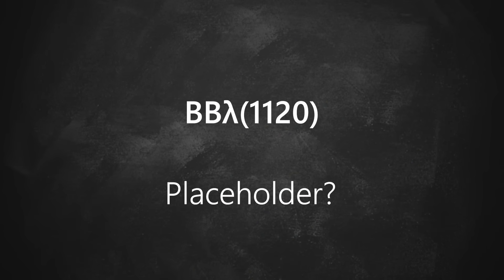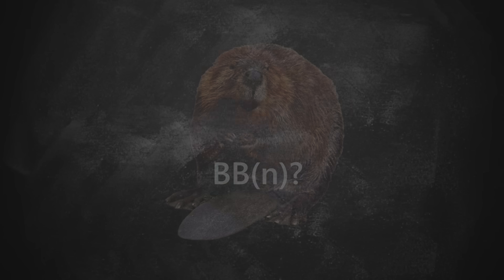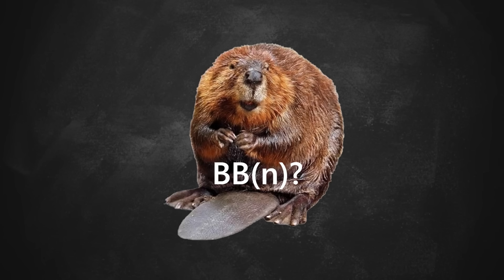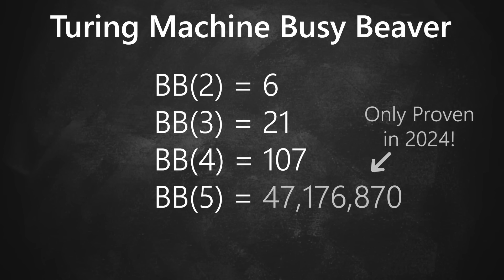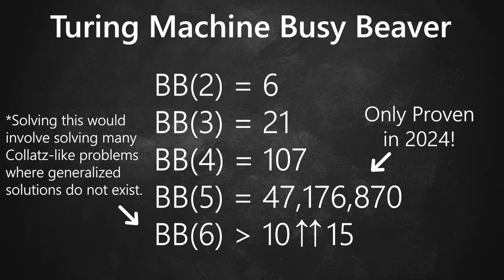It's more like a placeholder where the number would go when it's discovered. And proving that a number is a busy beaver is very difficult. Did you know that the five-state Turing machine busy beaver was only proven this year in 2024? And it's unlikely that a six-state busy beaver will ever be proven in our lifetime.